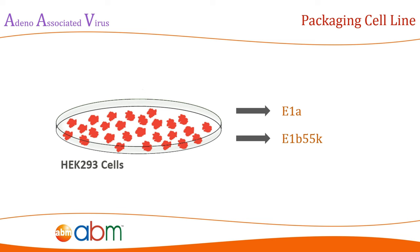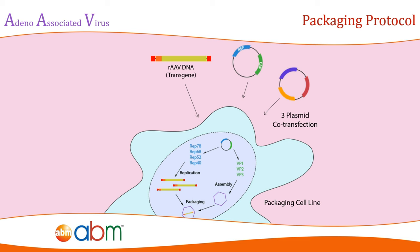AAV packaging cell lines are available for this purpose and can be used to streamline this process and reduce the number of reagents potentially needed to generate packaged recombinant AAV. A detailed packaging protocol showing a step-by-step method for the production of AAV is outlined in our knowledge base in the link provided below.